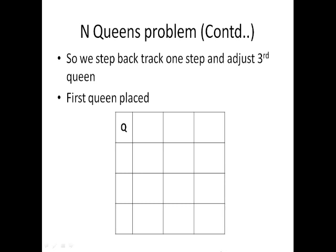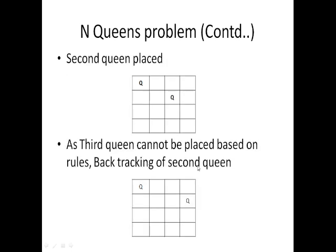This is the example for the 4-Queens problem. We have a 4×4 chessboard. The 1st queen is placed in the 1st location. As per the rules, we should not place any elements in the same row, same column, or same diagonal. So the next queen should be placed either in this position or in this position.